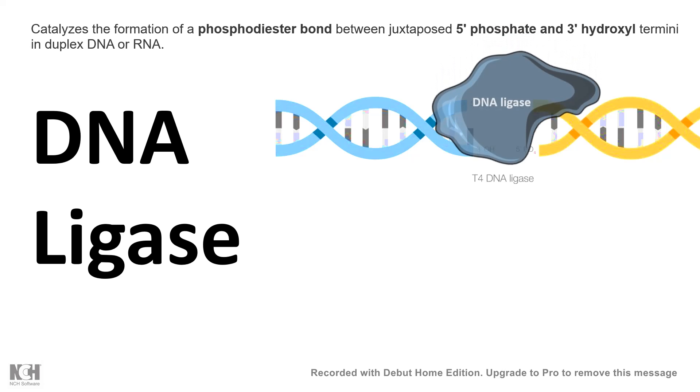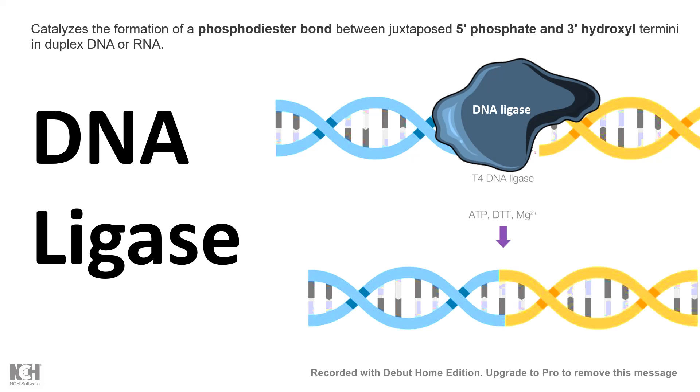It simply creates a phosphodiester bond between a juxtaposed 5' phosphate and a 3' hydroxyl termini of a DNA. It uses ATP for its function.